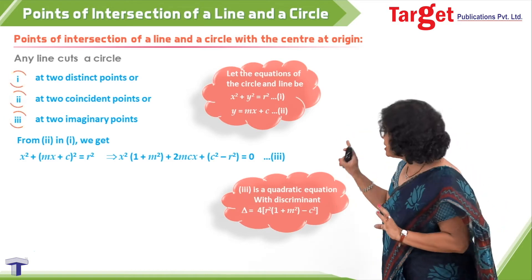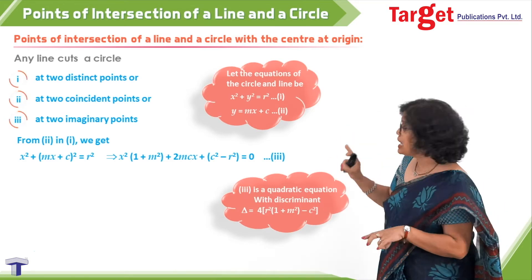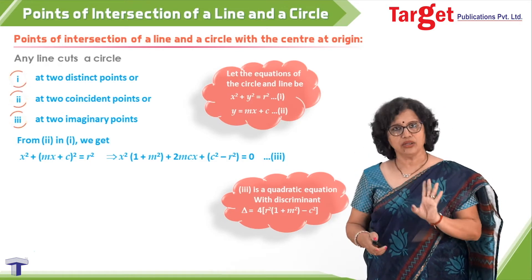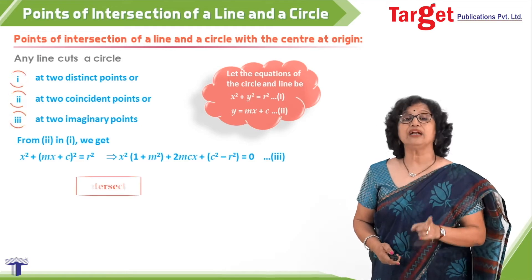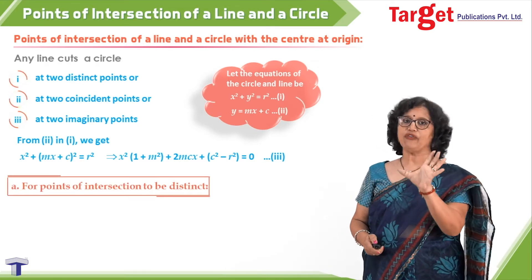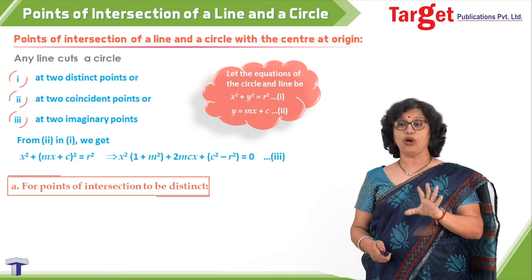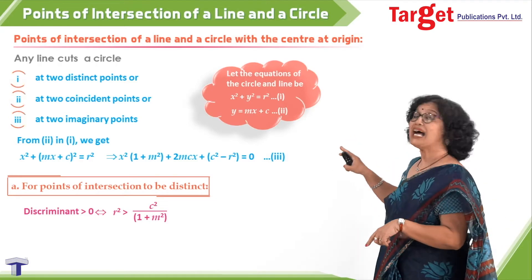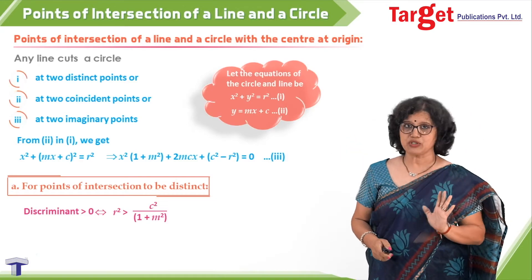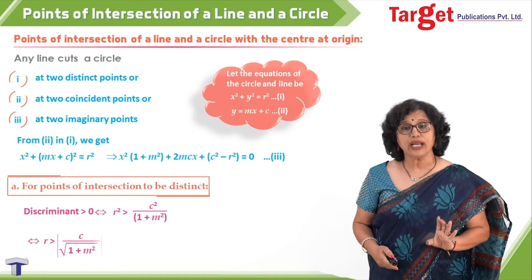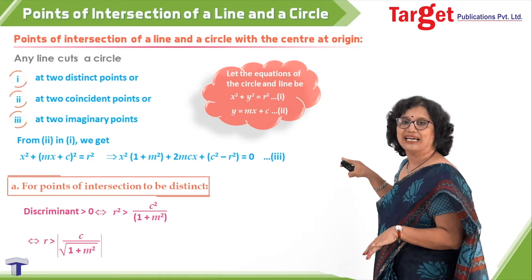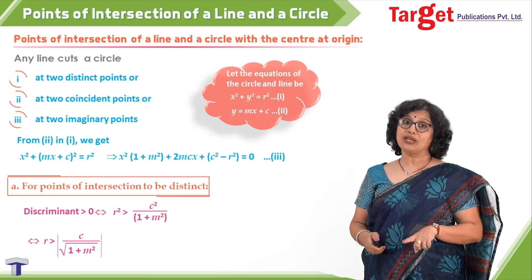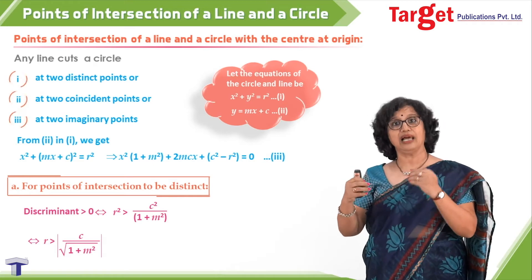We will be getting one quadratic equation, and the first thing that comes to mind is the discriminant. The discriminant is four times r squared into one plus m squared, minus c squared. Now the discriminant plays the key role. For two distinct points of intersection, the discriminant must be greater than zero, which is equivalent to r squared being greater than c squared upon one plus m squared, or r greater than the absolute value of c upon the square root of one plus m squared.